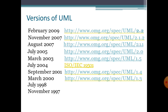UML 2.2 provides us with 14 types of UML diagrams, which are further divided into two broader categories. Each category has roughly seven types of diagrams. One broader category is structural diagrams and the other one is behavioral diagrams. These different diagrams available in UML 2.2 — the latest release from the OMG group — will be discussed in the later part of this lecture. In short, you can download the latest version of UML and create different diagrams to model your software system.